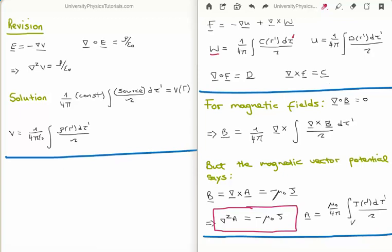For magnetic fields we apply Gauss's law for magnetic fields, which states the divergence of the magnetic field is zero — this holds for both magnetostatic and magnetodynamic situations. If the divergence of the magnetic field is zero, the vector field D is zero, which means the scalar field U is zero, meaning we cannot write the magnetic field in terms of a scalar potential. What is left is the vector potential: we can write the magnetic field as the curl of a magnetic vector potential, which we call capital A.